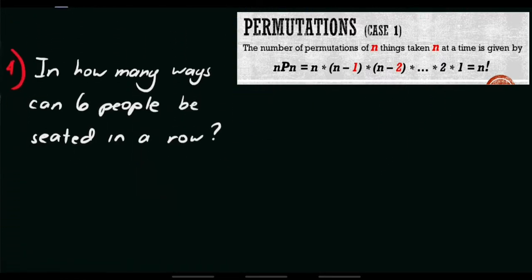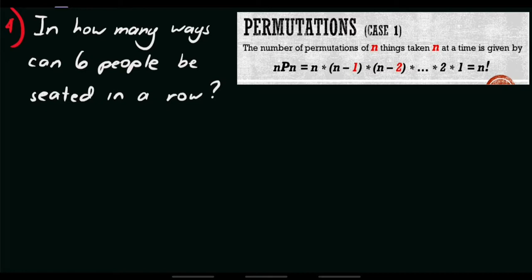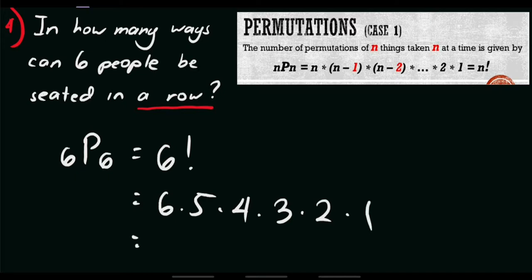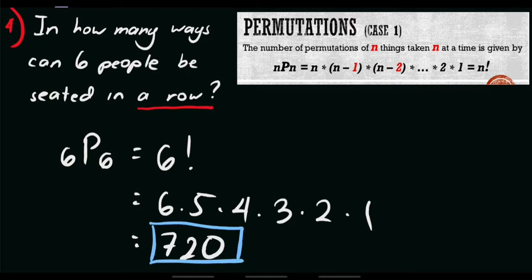Next, for problem number 4: in how many ways can 6 people be seated in a row? Since we are asked to determine the number of ways this set of people can be seated in a row, we need to use the concept of factorial. This is similar to the permutation of 6 things taken 6 at a time. So, this equals 6P6, or simply 6 factorial, which is 6 times 5 times 4 times 3 times 2 times 1, equals 720. So, we have 720 ways to arrange this set of people seated in a row.